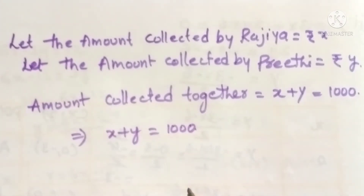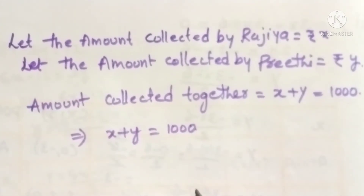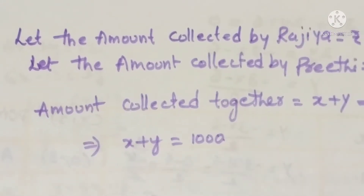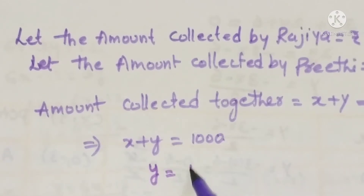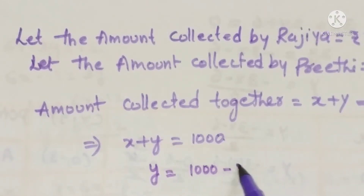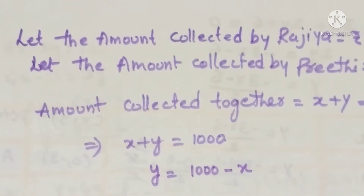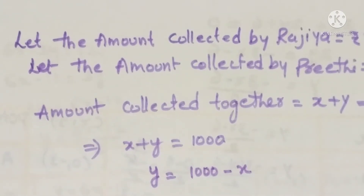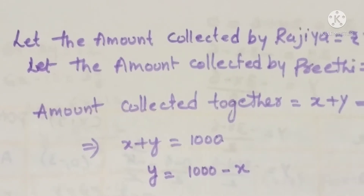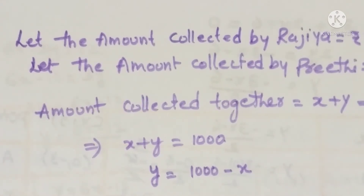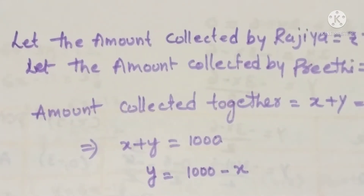To draw the graph, first of all we have to find the value of Y. So Y equals 1000 minus X. We will find the values: X, Y equals 1000 minus X, X, Y, and the corresponding points.